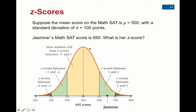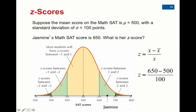To find Jasmine's exact position, we follow the formula: z equals her data value 650, minus the mean of 500, divided by the standard deviation of 100. Remember to do 650 minus 500 first, then divide by 100 because there are implied parentheses in the numerator. So 650 minus 500 is 150, and 150 divided by 100 is 1.5. Jasmine's score is exactly one and a half standard deviations above the mean.